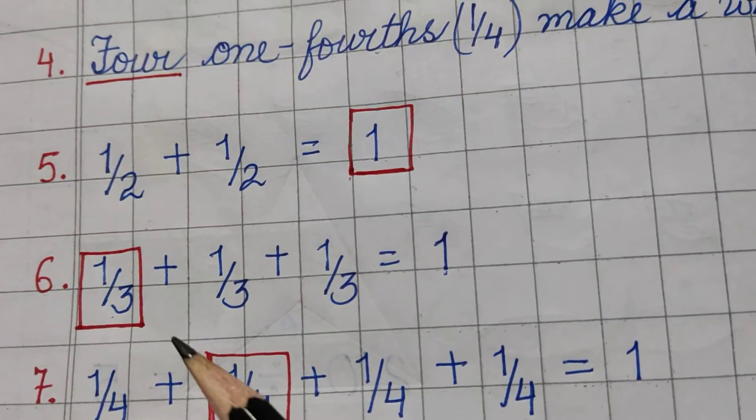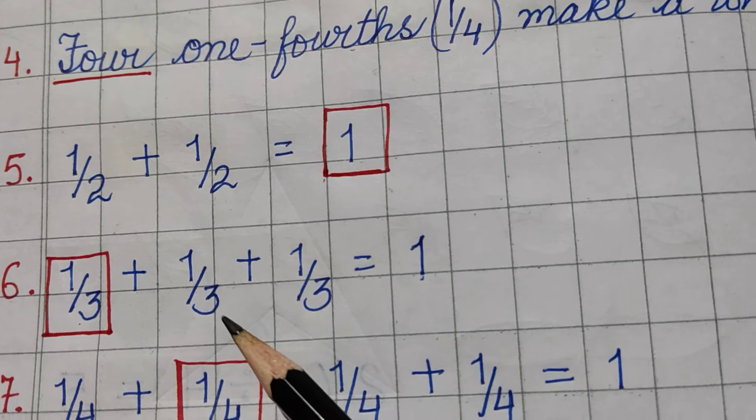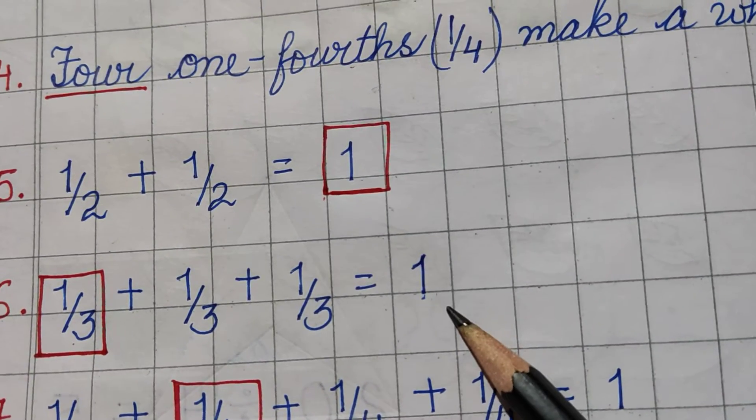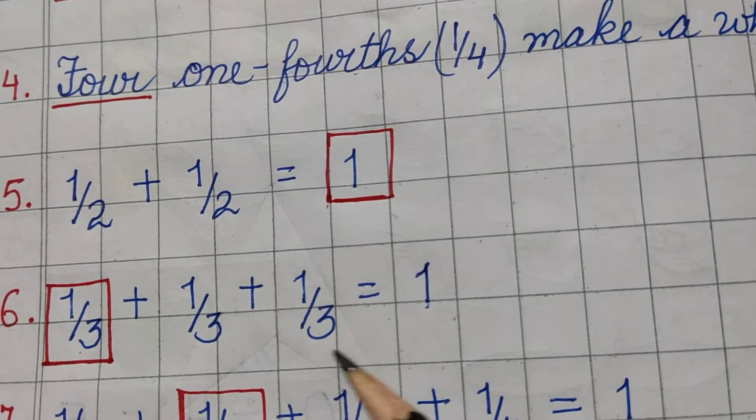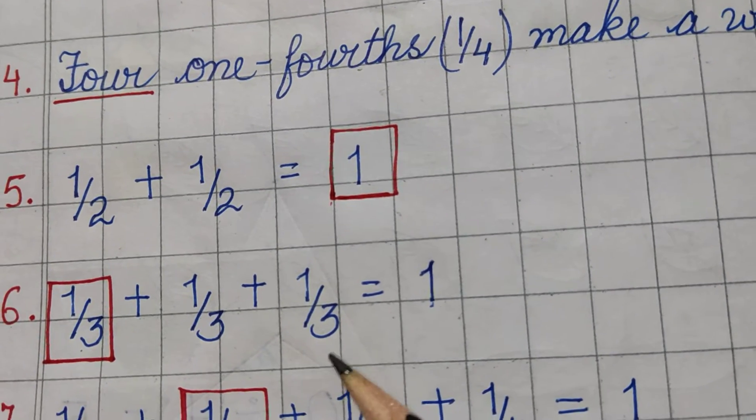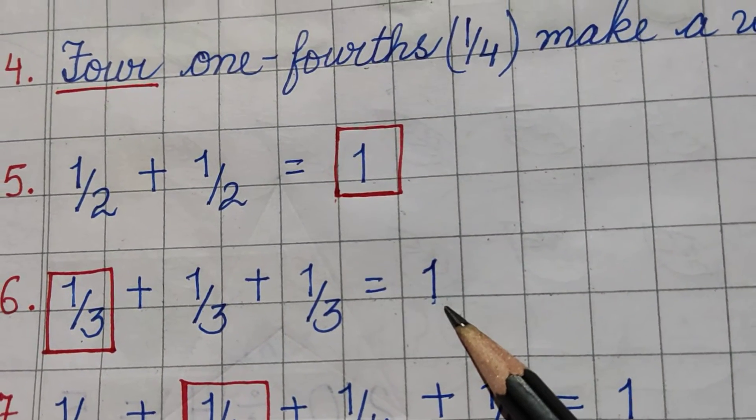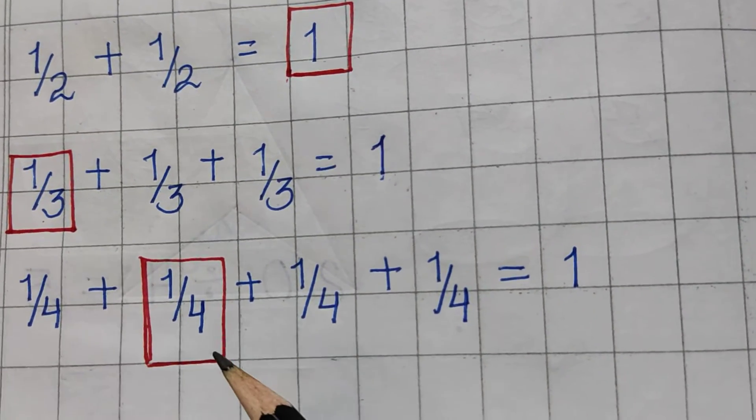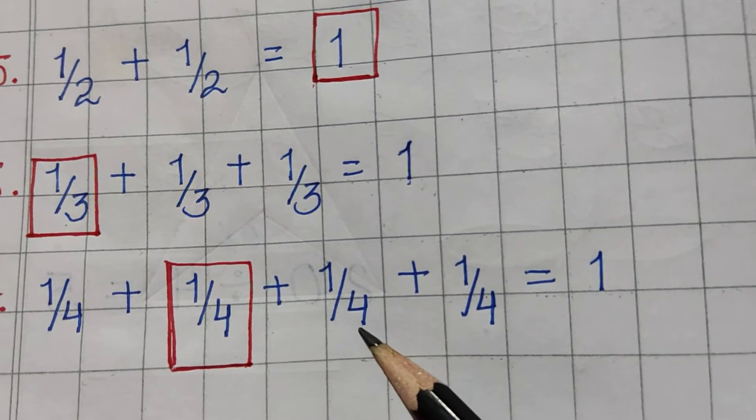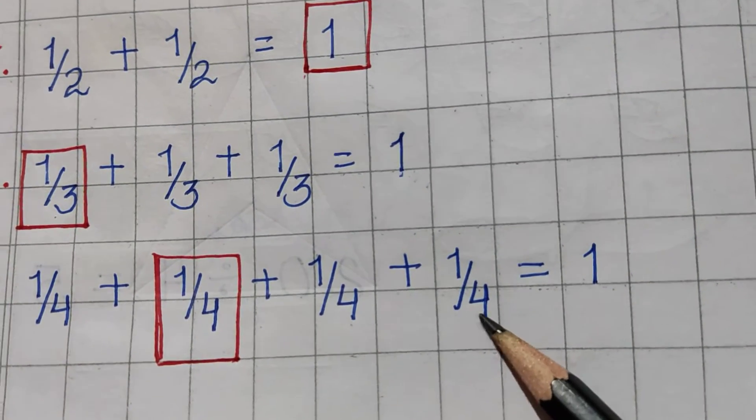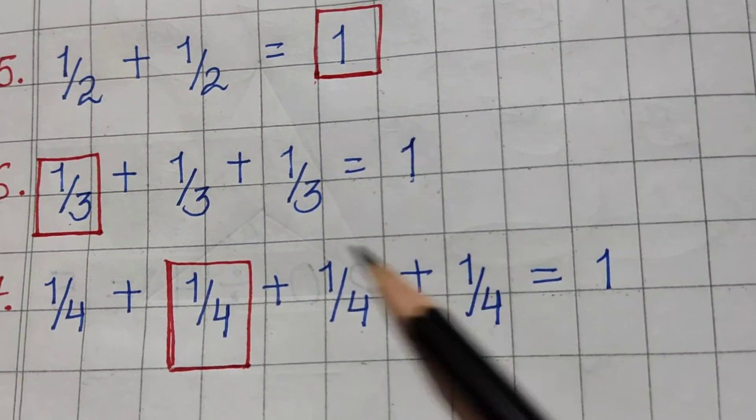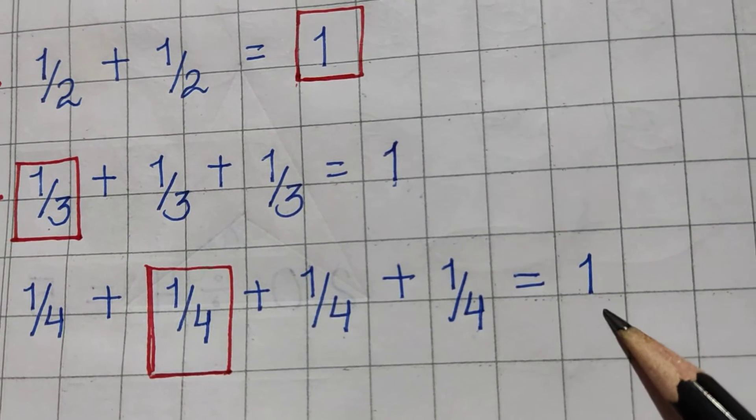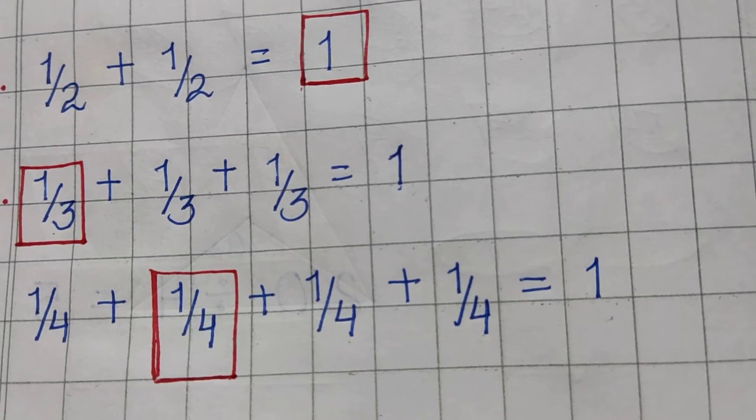6th one is 1 third plus 1 third plus 1 third is equal to 1. If 3 one-thirds get a whole, 1 complete 1 make a whole. 7th one is 1 fourth plus 1 fourth plus 1 fourth plus 1 fourth, four one-fourths, then it is equal to 1.